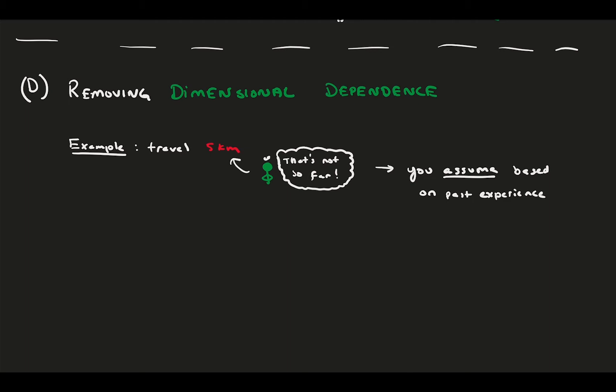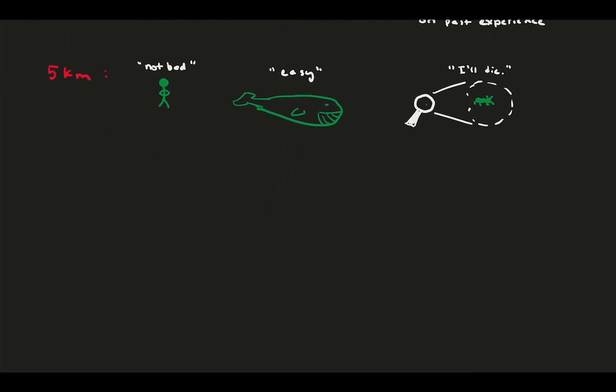You might think of how many hours it takes to walk it, or how much of your day it eats up, or if it would be too physically taxing. What you're doing when you think like this is non-dimensionalizing, or you're thinking relatively about the problem. And naturally, you make the assumption that it's you, most likely a human, traveling the distance. However, the distance is different for everyone who considers it. While a human might think that it's not too long of a distance, a whale, who typically travels great distances in migration, might think it's rather easy.